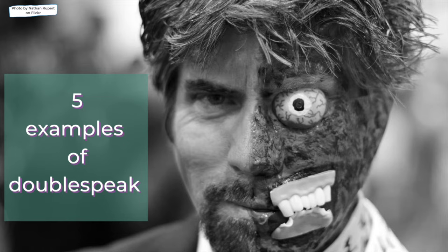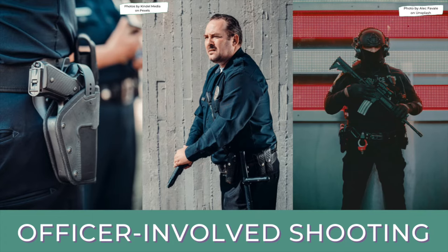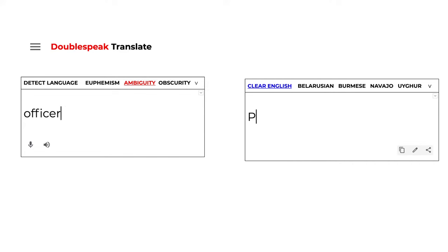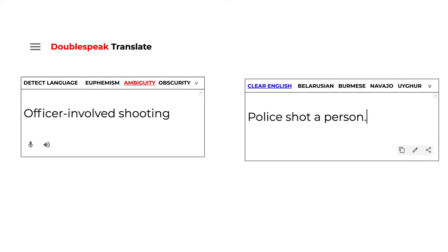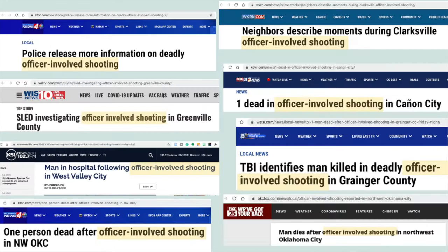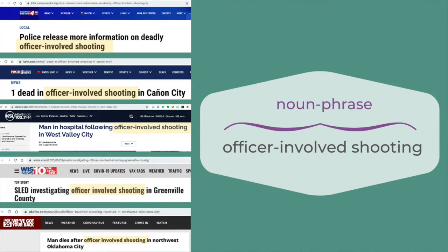Here are five examples of doublespeak. Officer-involved shooting is police doublespeak for police shot a person. It's an ambiguous way to describe police violence without assigning blame. Grammar is used to create doubt and confusion. It's hard to determine a responsible party when an action verb is absent. Officer-involved shooting is a noun phrase that contains no verb.